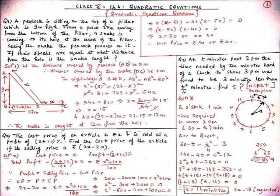Let us understand this problem with the help of a diagram. Let AB be the pole, with the peacock sitting at the top A, and the hole at B. Initially, the snake is at point C, when the peacock notices it, such that the distance between the hole and the snake is 27 meters.